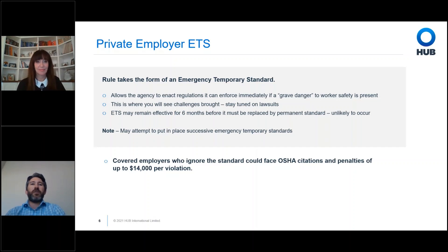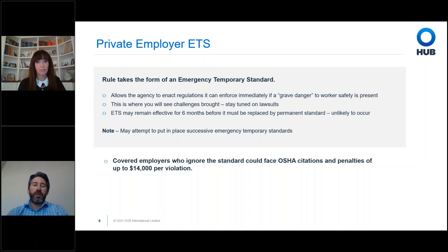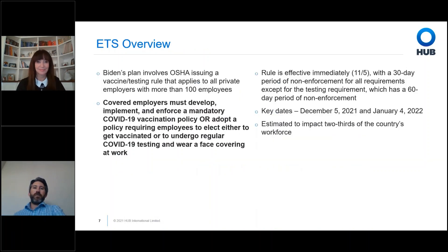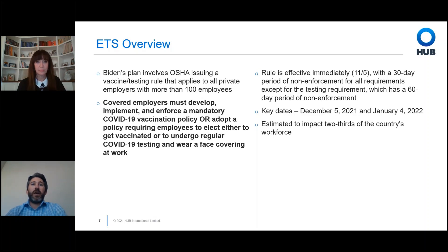What is an Emergency Temporary Standard? It is the government saying there's a grave danger — something very significant that we have to protect against. That's where you will see the lawsuits. These citations are going to be deemed serious — the serious citation number is $13,000 and change, which rounds up to the $14,000 figure you've seen. Keep in mind that is likely to be per-person violation. The ETS itself was released on November 4th and published on November 5th. The 100-employee threshold was kept in.